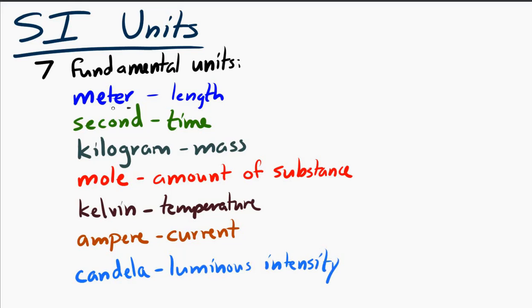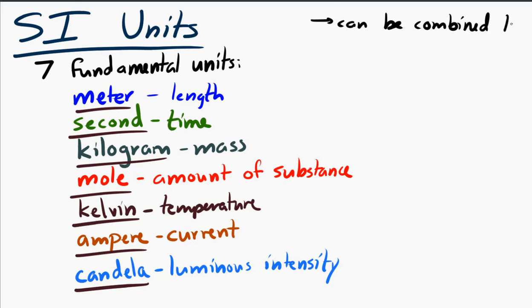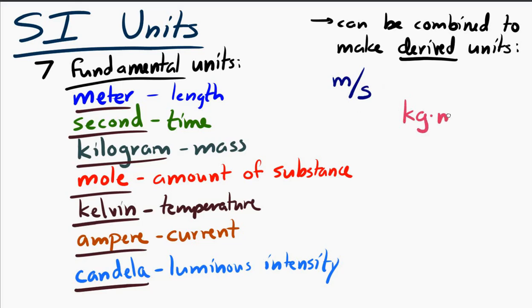So, these seven units can be combined in different ways to make new units. And the units that are created by combining them are called derived units. So, there are seven fundamental units, and if you mix them up and combine them in different ways, you can create derived units. Derived units would be all kinds of things, such as meters per second, or kilogram meters squared, or ampere second, or kilogram per second cubed per Kelvin to the fourth. You can mix them in all kinds of different ways, and we will see that throughout the course.